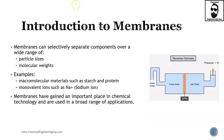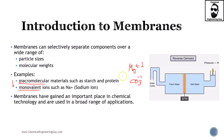Membranes can selectively separate materials depending on particle size, molecular weight, and even charge. Examples of materials separated include macromolecular materials — such as sugars, starch, proteins, nucleotides, and DNA — as well as commonly ions like the magnesium ion or carbonate ion. The difference between macromolecular species and ions is huge, typically around a thousand times in size.